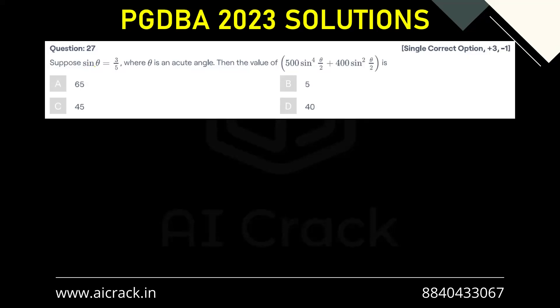Let's solve question number 27. Suppose sine theta equals 3 by 5 where theta is an acute angle, then the value of 500 times sine to the 4th theta by 2 plus 400 times sine square theta by 2.